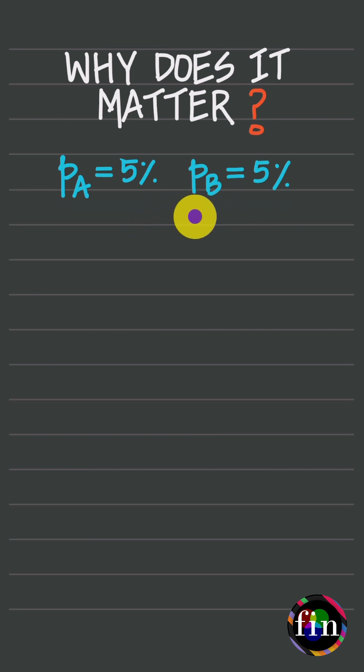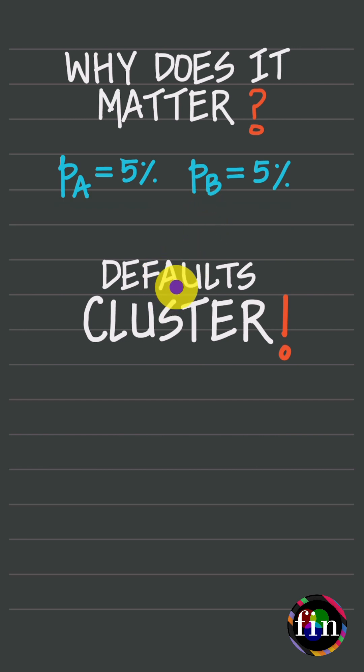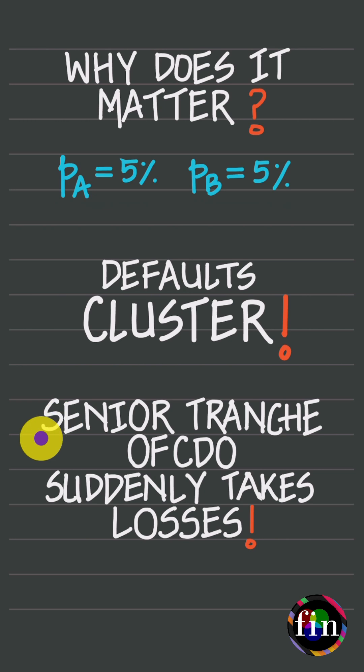if a downturn strikes, defaults arrive in clusters or waves. Under this situation, even a seemingly low-risk product such as the senior tranche of a CDO suddenly starts to take losses. This is why default correlation is important.